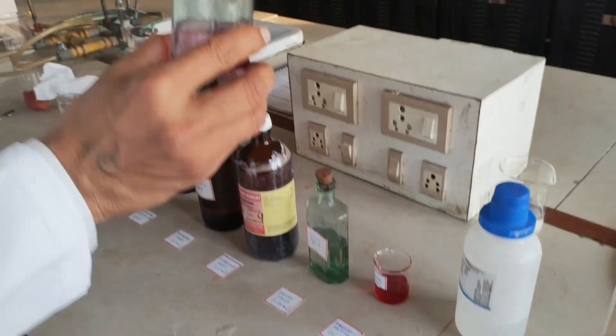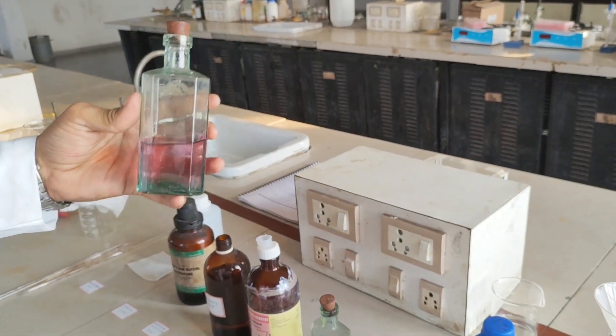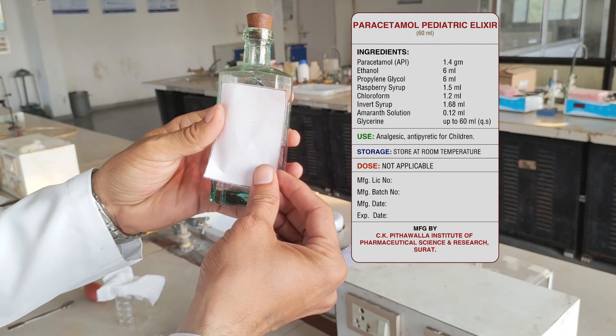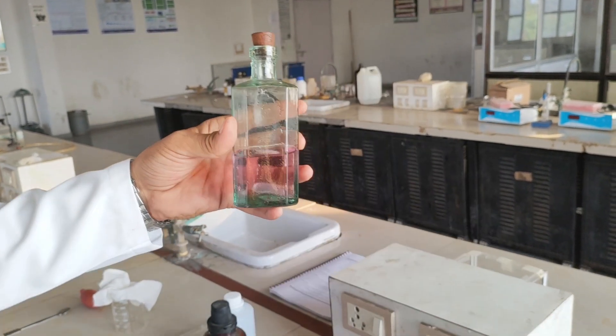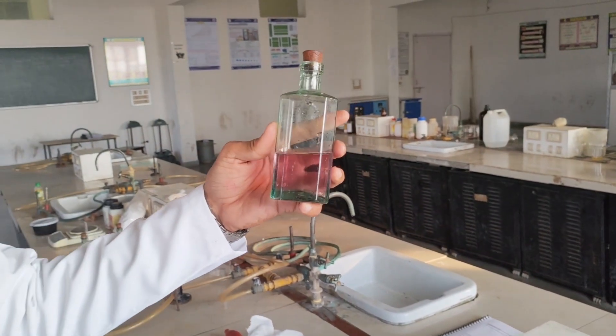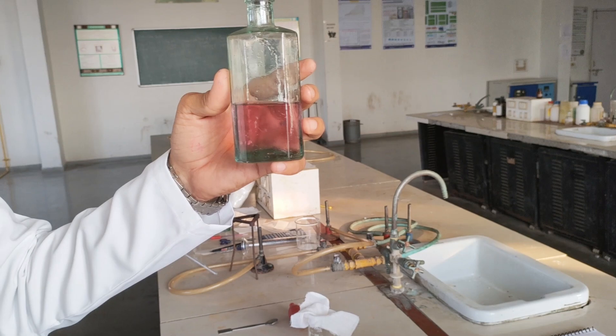After filling into the final container, put one cork and paste the label with appropriate information as per requirement. This is our paracetamol pediatric elixir used as an analgesic and antipyretic for children. Thank you.